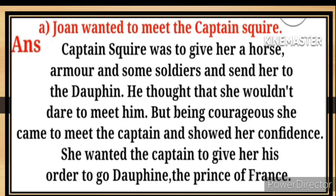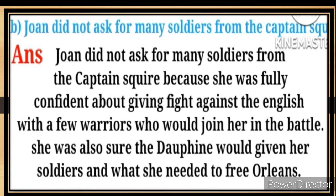He thought she wouldn't dare to meet him, but being courageous she came to meet the captain and showed her confidence. She wanted the captain to give her his orders to go to the Dauphin, the prince of France. Answer (b): Joan did not ask for many soldiers from the captain Squire because she was fully confident about giving fight against the English with a few warriors who would join her in the battle.